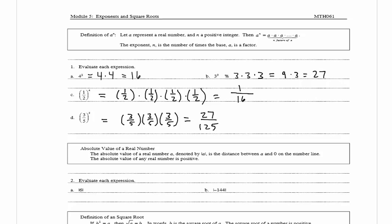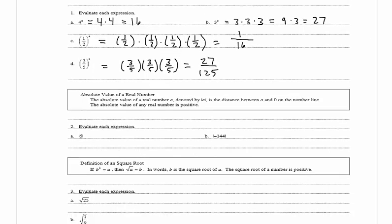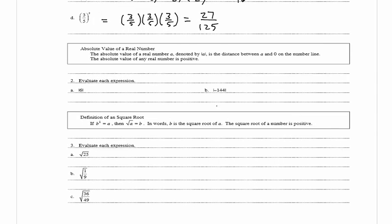Now we're going to take a look at absolute value. When you have absolute value signs around a number, we're always going to output the positive number. The absolute value of 6 is equal to 6. In b we have the absolute value of negative 144, and the absolute value of negative 144 is 144.